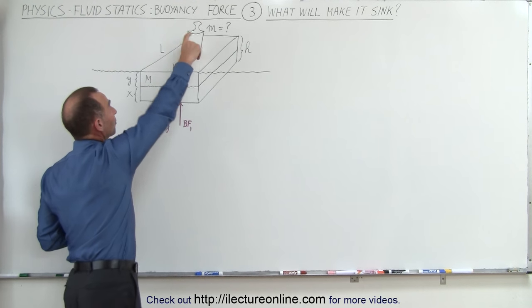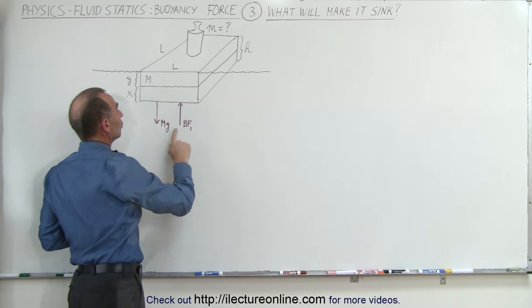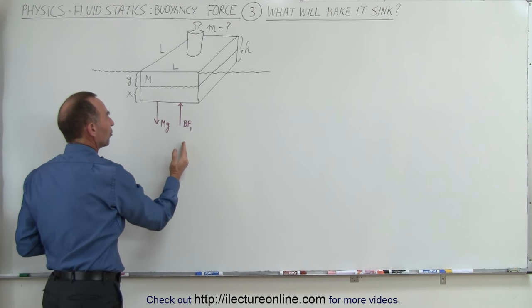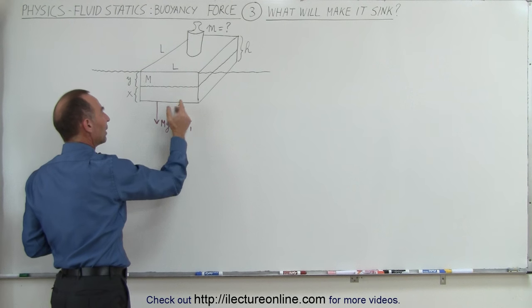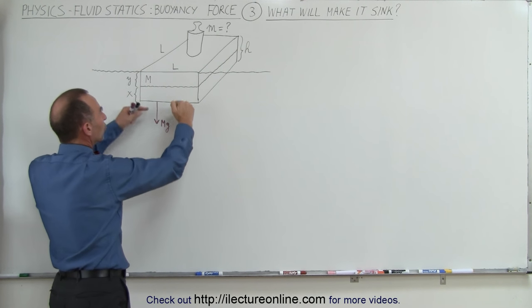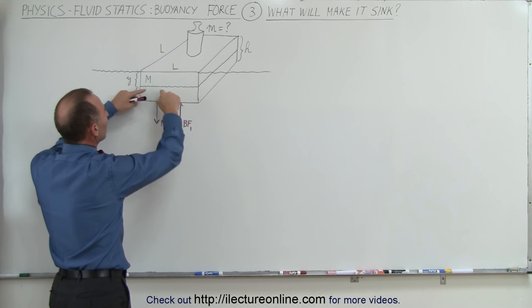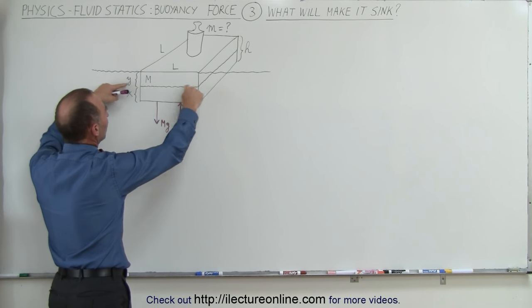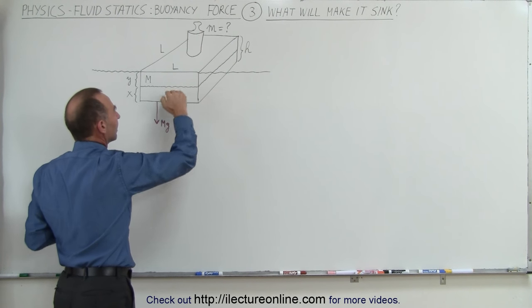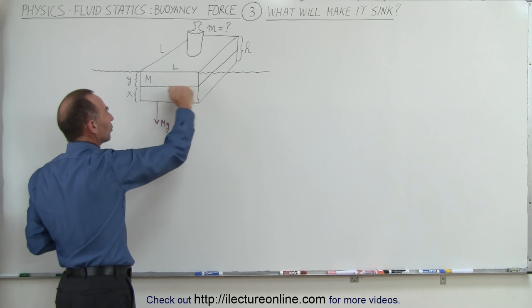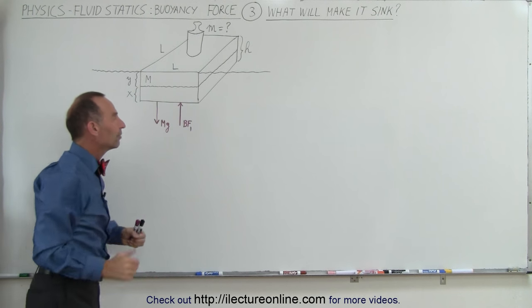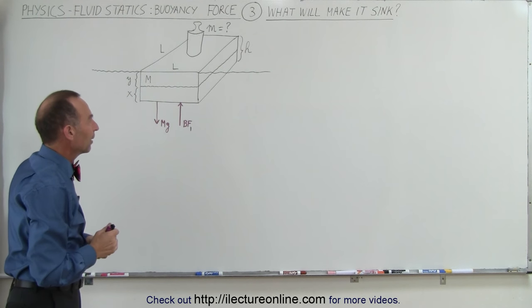Before we place the object on there, notice that the buoyancy force which pushes the object up is equal to the weight of the object. When those two are equal to one another, that's where the surface of the water will balance out and find its equilibrium point along the side of the object.